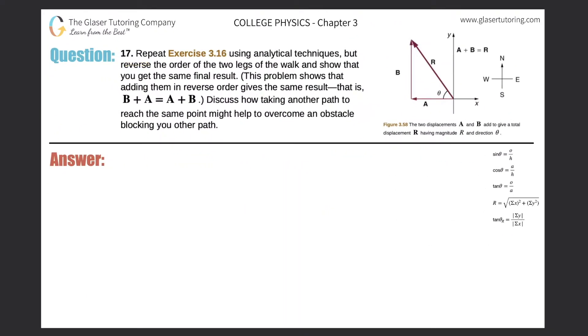Number 17: Repeat exercise 3.16 using analytical techniques, but reverse the order of the two legs of the walk and show that you get the same final result. So in exercise 16, they said that first you walk 18 meters west, and then after you reach this point, you're going to walk 25 meters north. But instead...